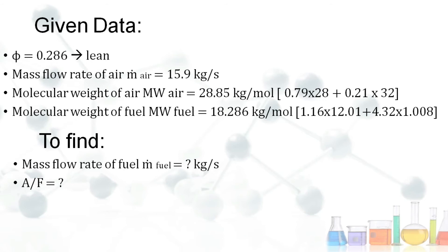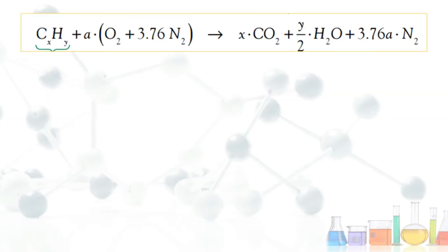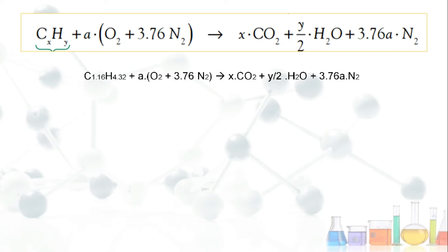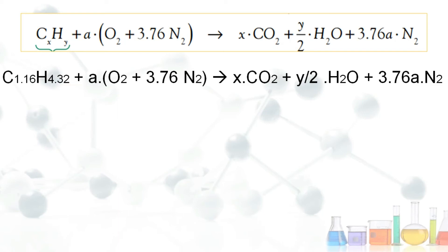Using the general equation C_x H_y + A(O₂ + 3.76 N₂) → X CO₂ + Y/2 H₂O + 3.76A N₂, and substituting the given fuel composition, X = 1.16 and Y = 4.32.